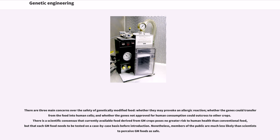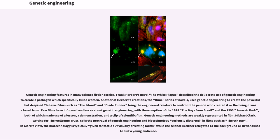Genetic engineering features in many science fiction stories. Frank Herbert's novel described the deliberate use of genetic engineering to create a pathogen which specifically killed women. Another of Herbert's creations, the Dune series of novels, uses genetic engineering to create powerful but despised characters. Films such as The Island and Blade Runner bring the engineered creature to confront the person who created it or the being it was cloned from. Few films have informed audiences about genetic engineering, with the exception of the 1978 The Boys from Brazil and the 1993 Jurassic Park. Michael Clarke, writing for the Wellcome Trust, calls the portrayal of genetic engineering and biotechnology seriously distorted in films such as The Sixth Day, noting that the biotechnology is typically given fantastic but visually arresting forms while the science is either relegated to the background or fictionalized to suit a young audience.